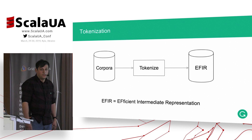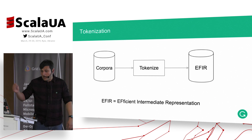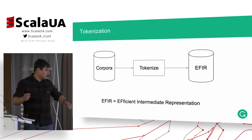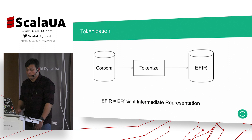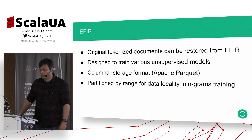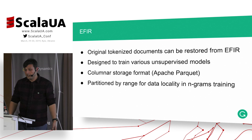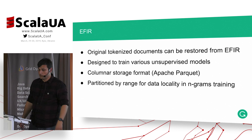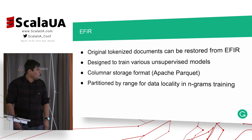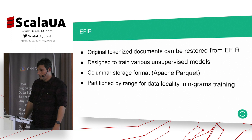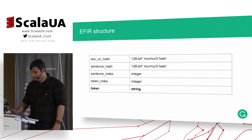For scaling we use Apache Spark. Our pipeline is very simple. The first step: we get the corpora, tokenize it, and store it in the format we call Efficient Intermediate Representation. It's a Parquet-based data format stored in S3, primarily designed to train n-grams but also to train other unsupervised models. It stores data in Apache Parquet format and is partitioned by range for data locality.